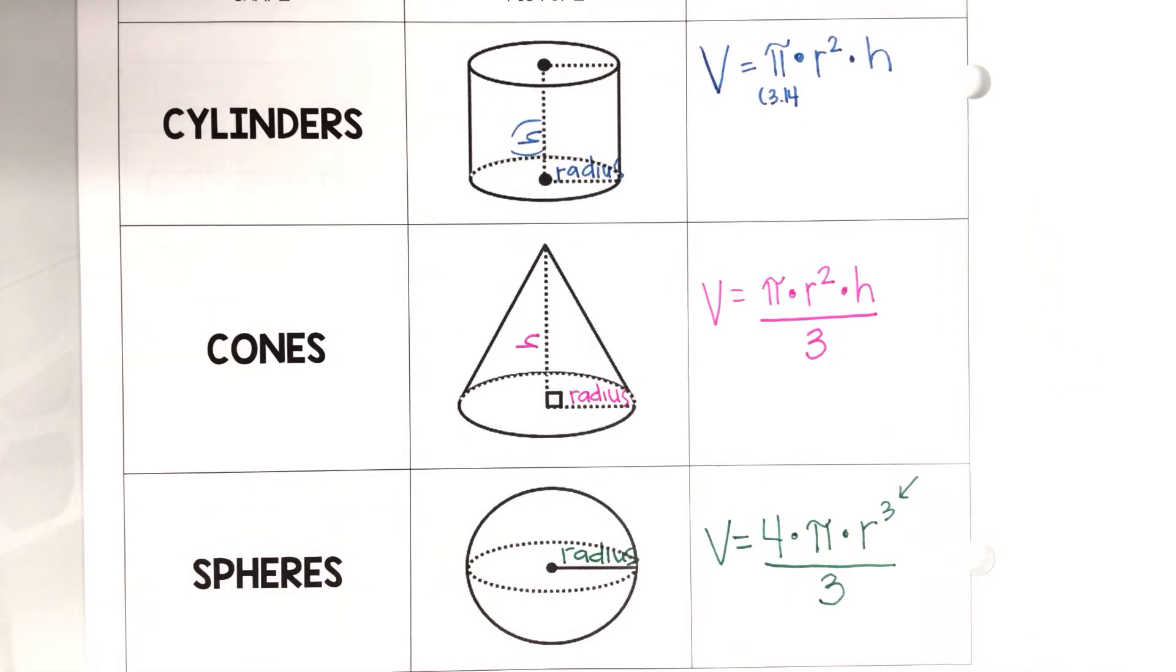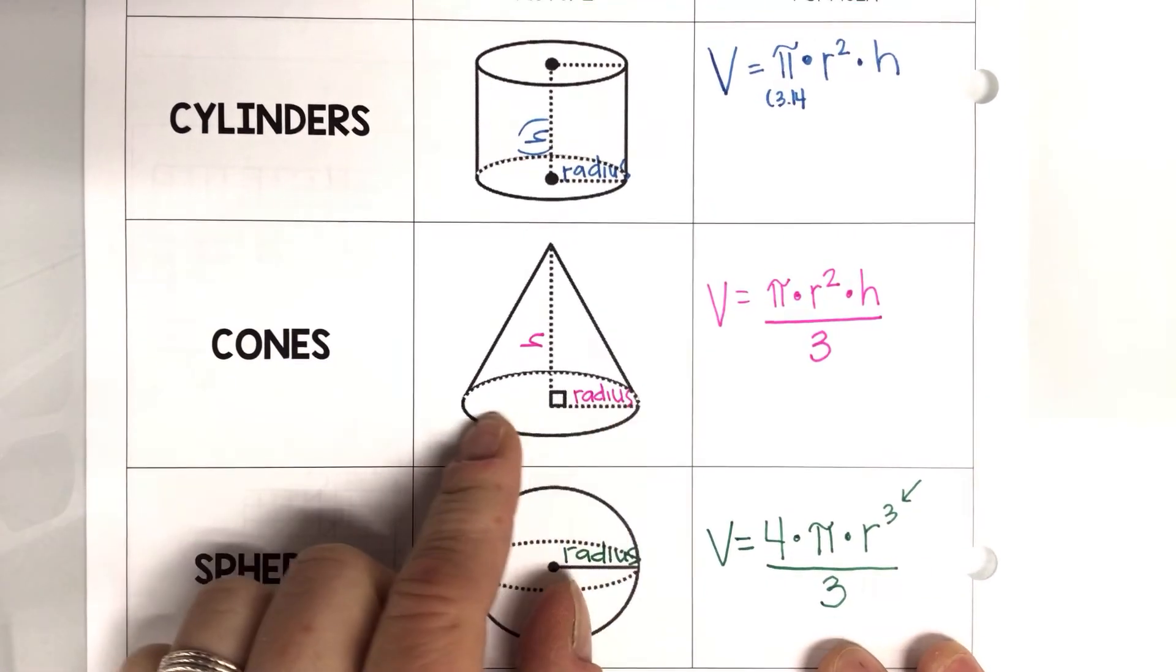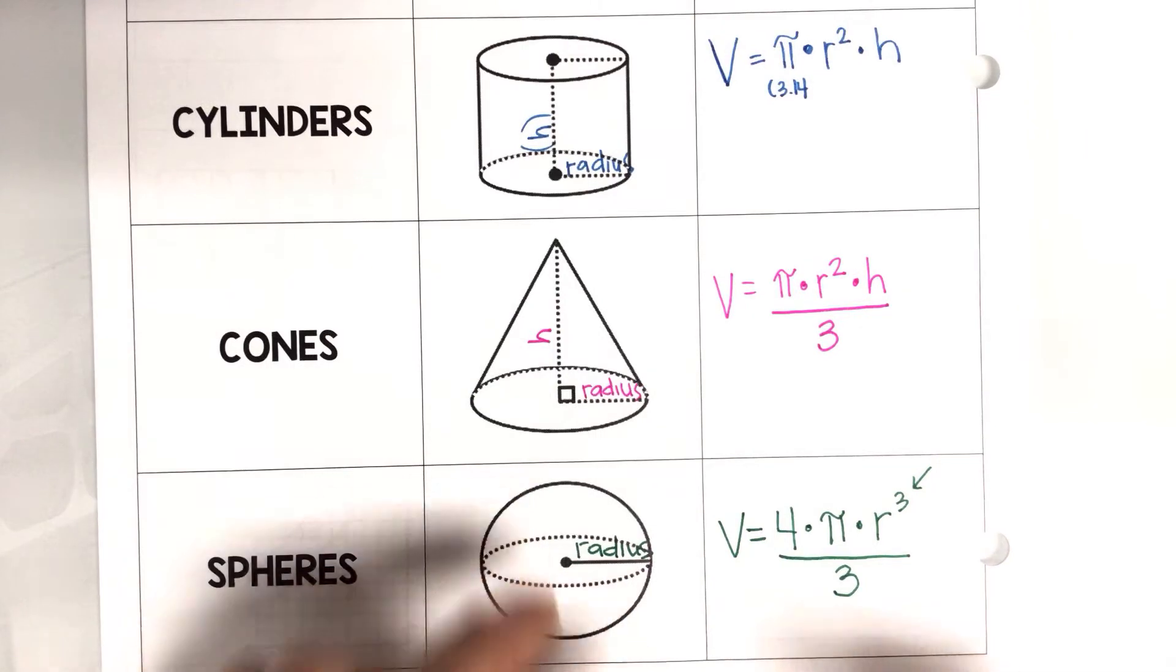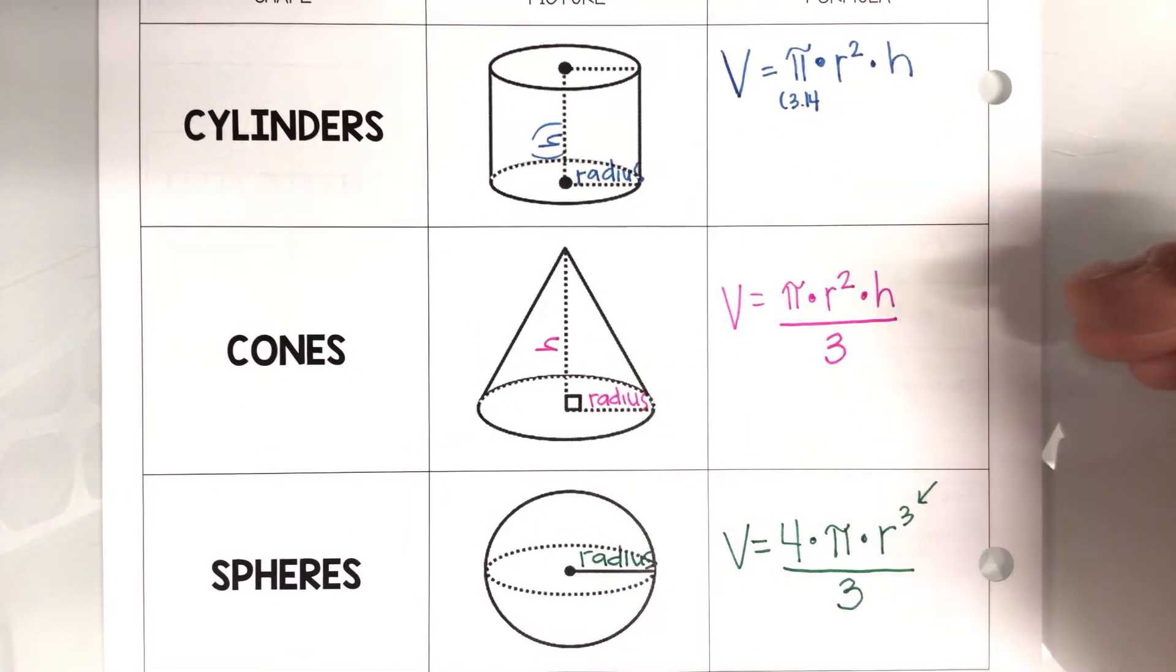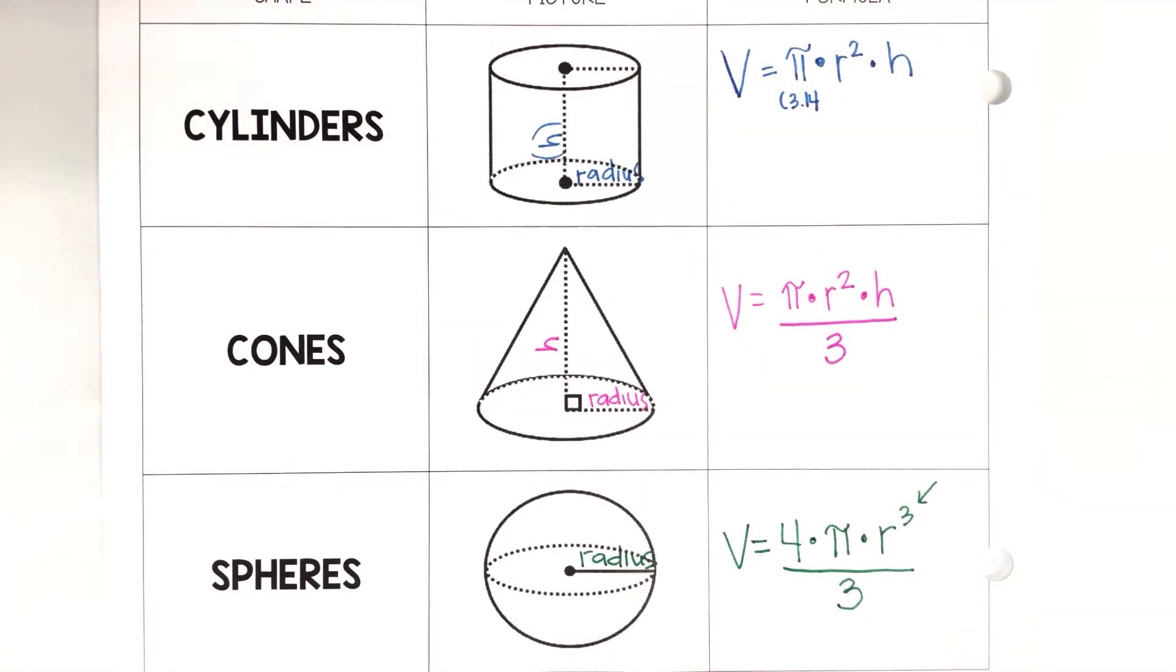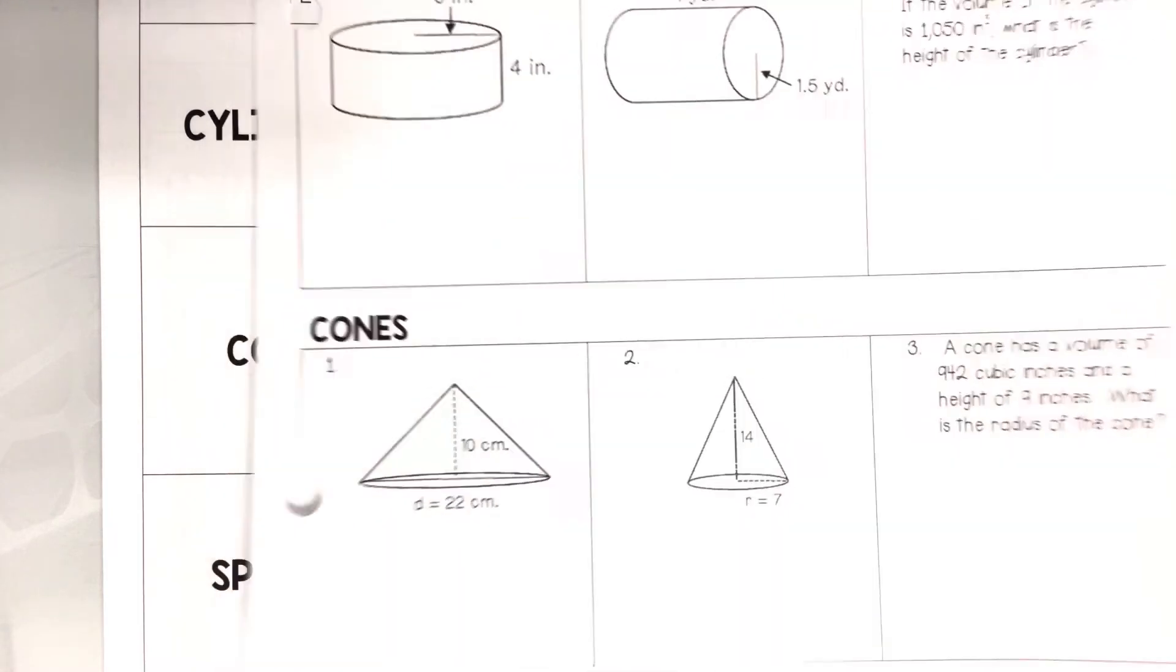Again, if they give you the diameter, so let's say that on one of these they gave you the diameter all the way across, you just have to divide it by 2 and then you'd have your radius. So there are your three formulas that you're going to use for the assignment, for our notes, for the rest of your notes and then your assignment today.